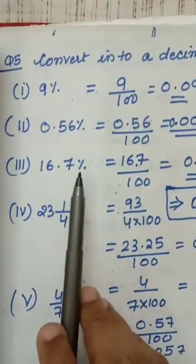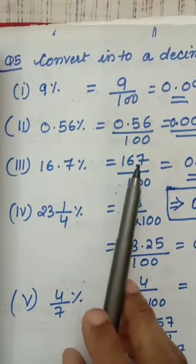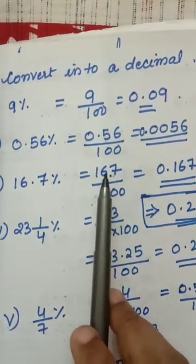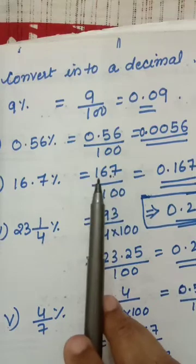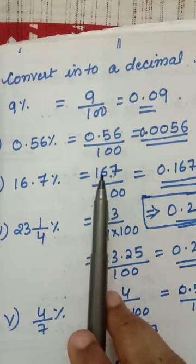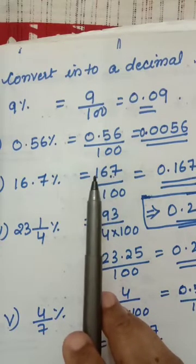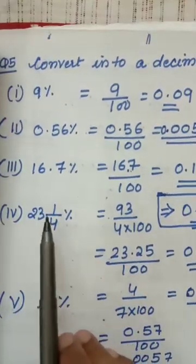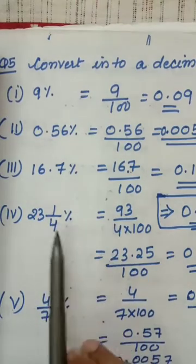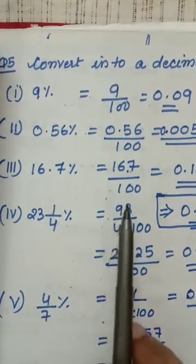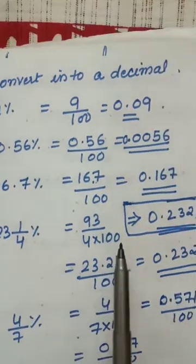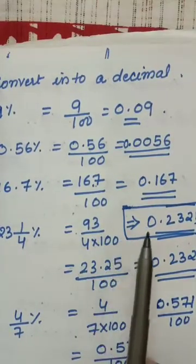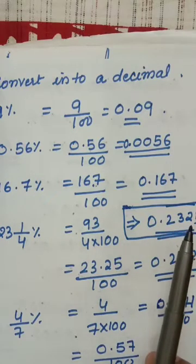16.7 percentage: 16.7 percentage means divided by 100. Dividing by 100 means take 2 digits before the decimal — see, 1 and 6 are 2 digits — and put a point: 0.167. Like that 23 and 1 by 4 percentage: make it into improper fraction. Percentage means divided by 100. 93 divided by 4 divided by 100 — you get 0.2325.